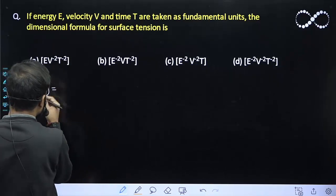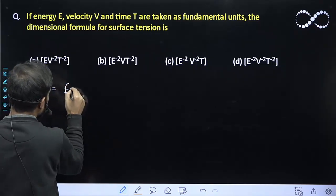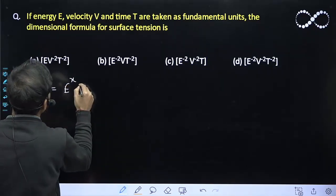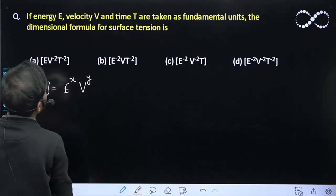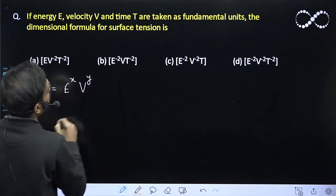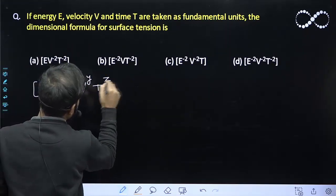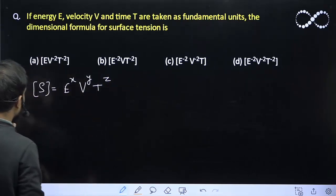Let us assume the dimension of S is equal to E raised to power X, V raised to power Y, and T raised to power Z. All I need to find are X, Y and Z.